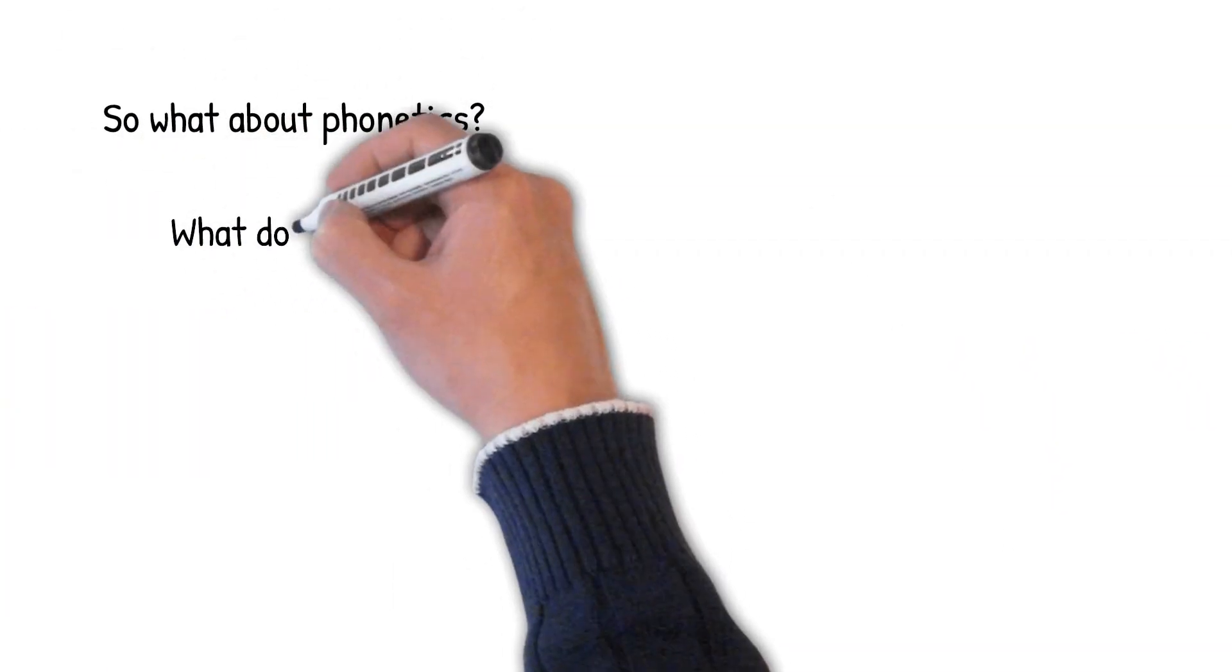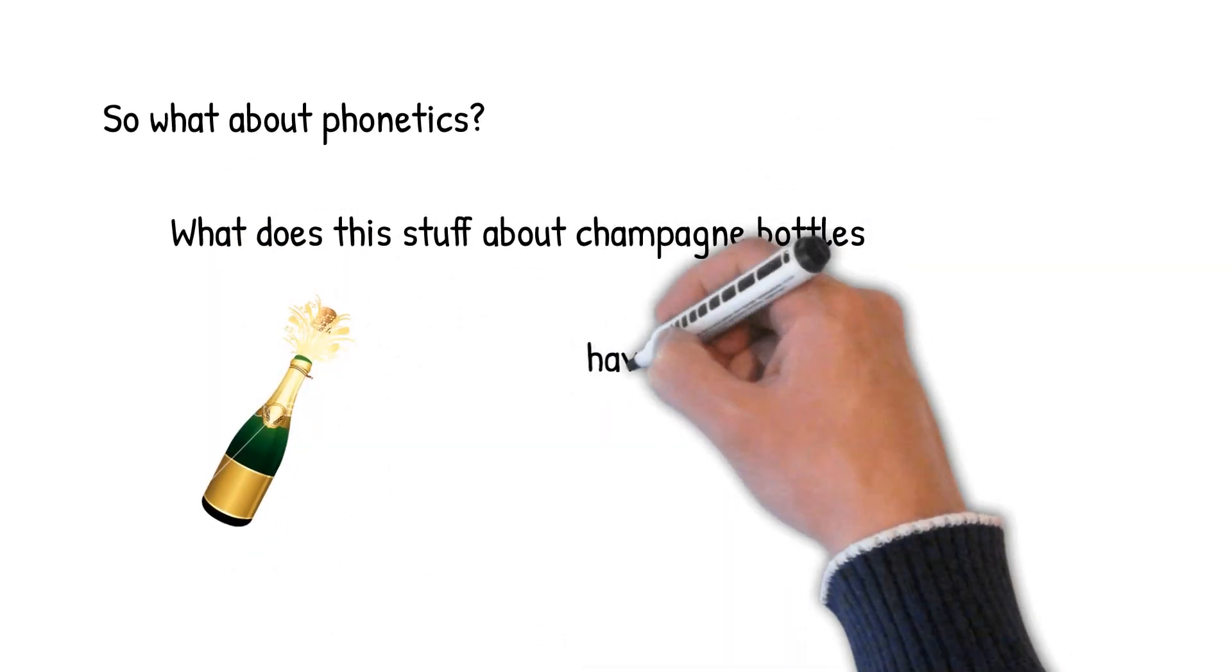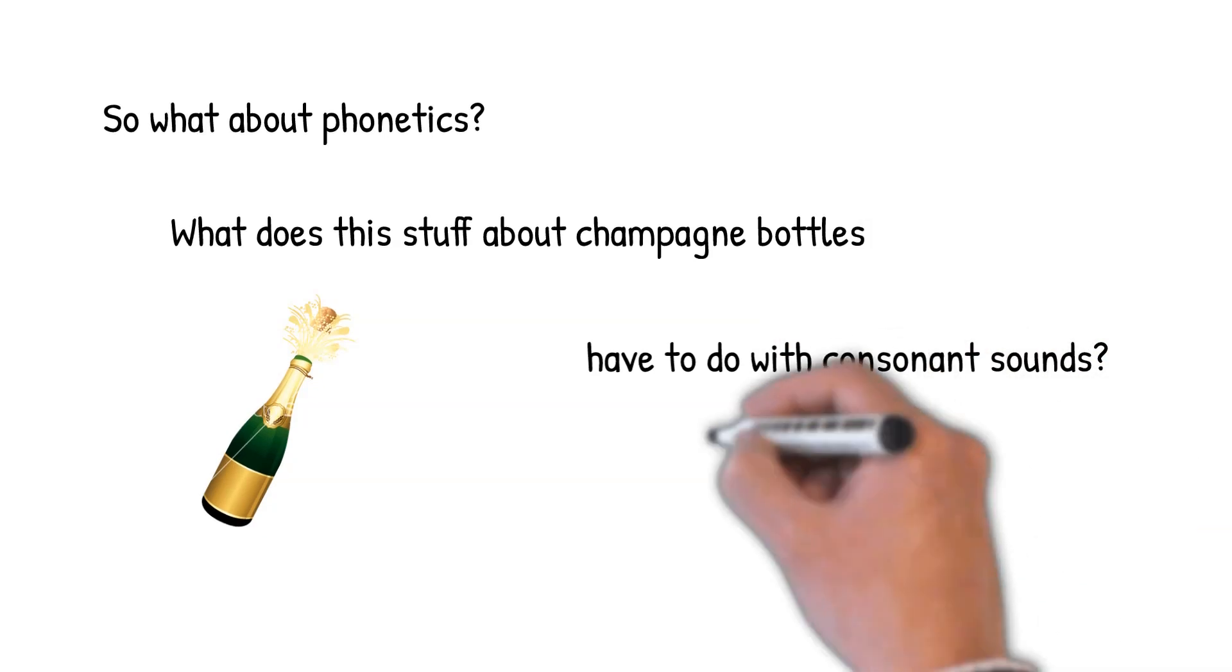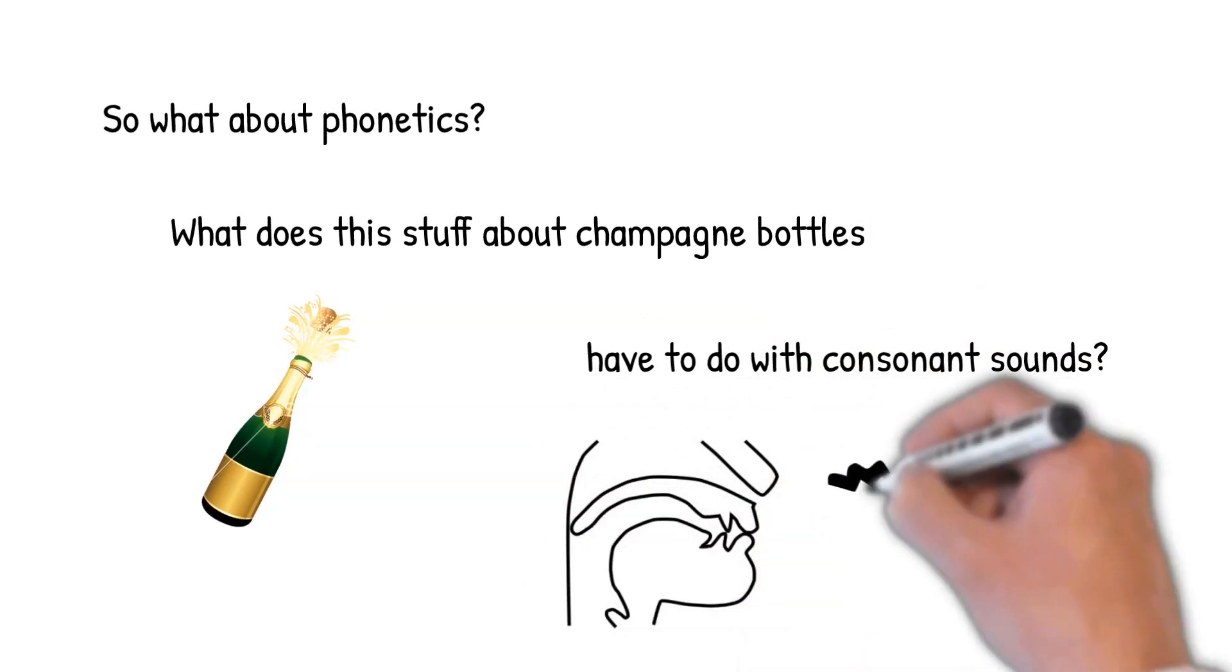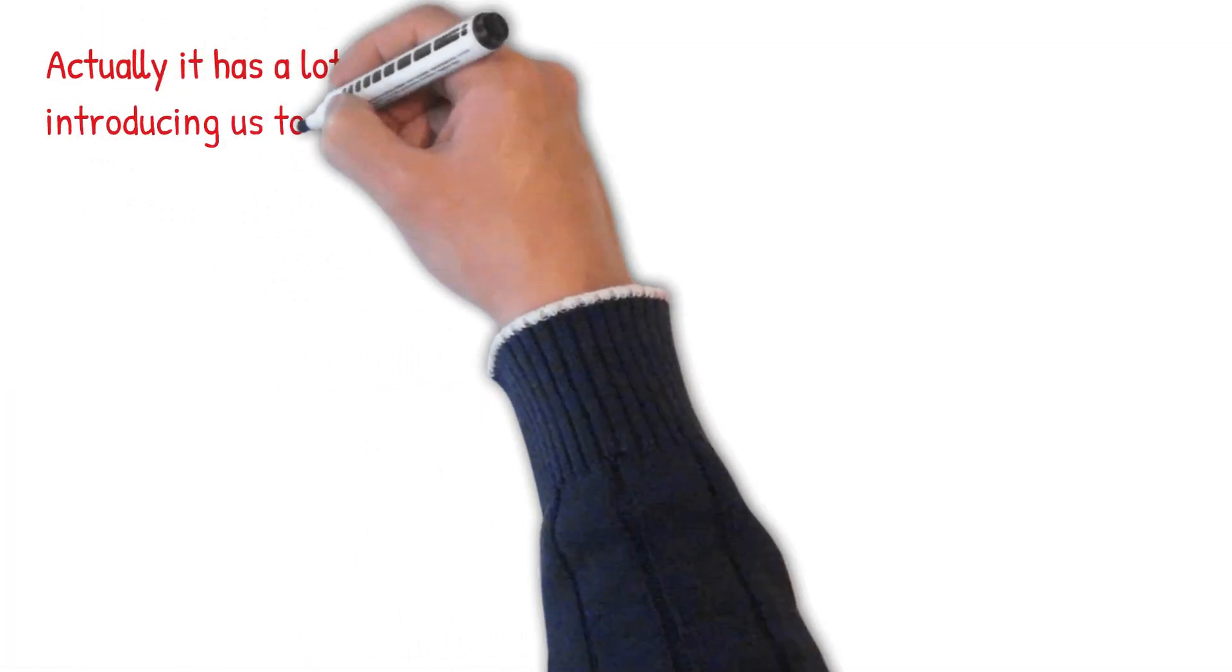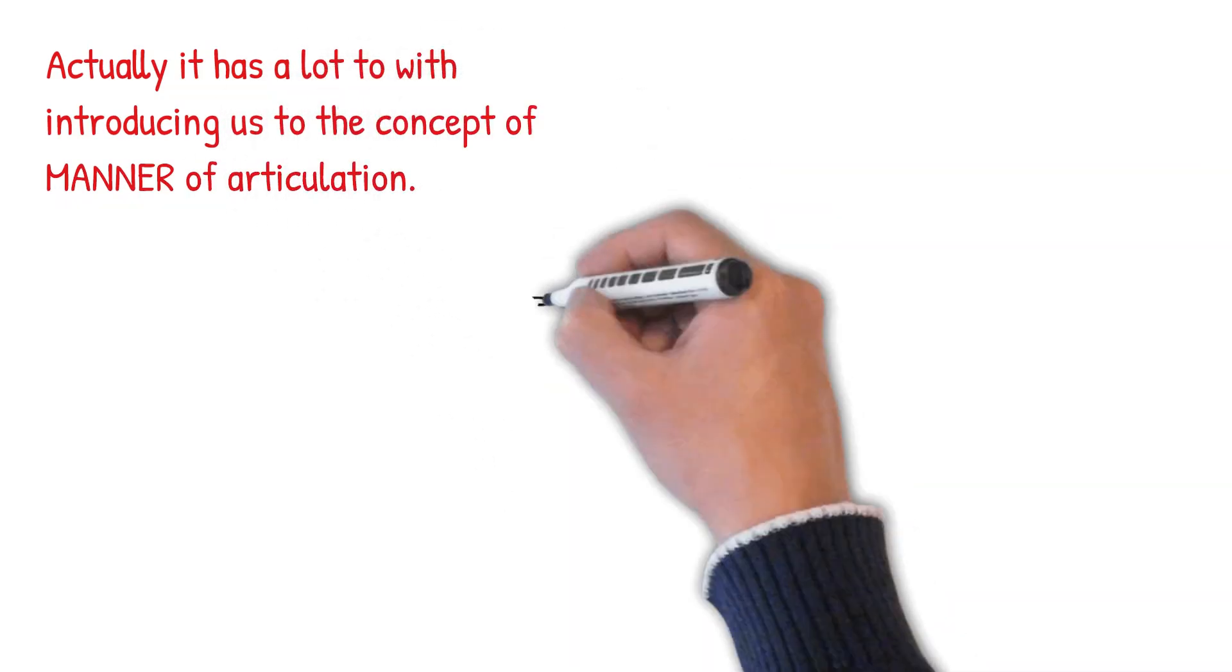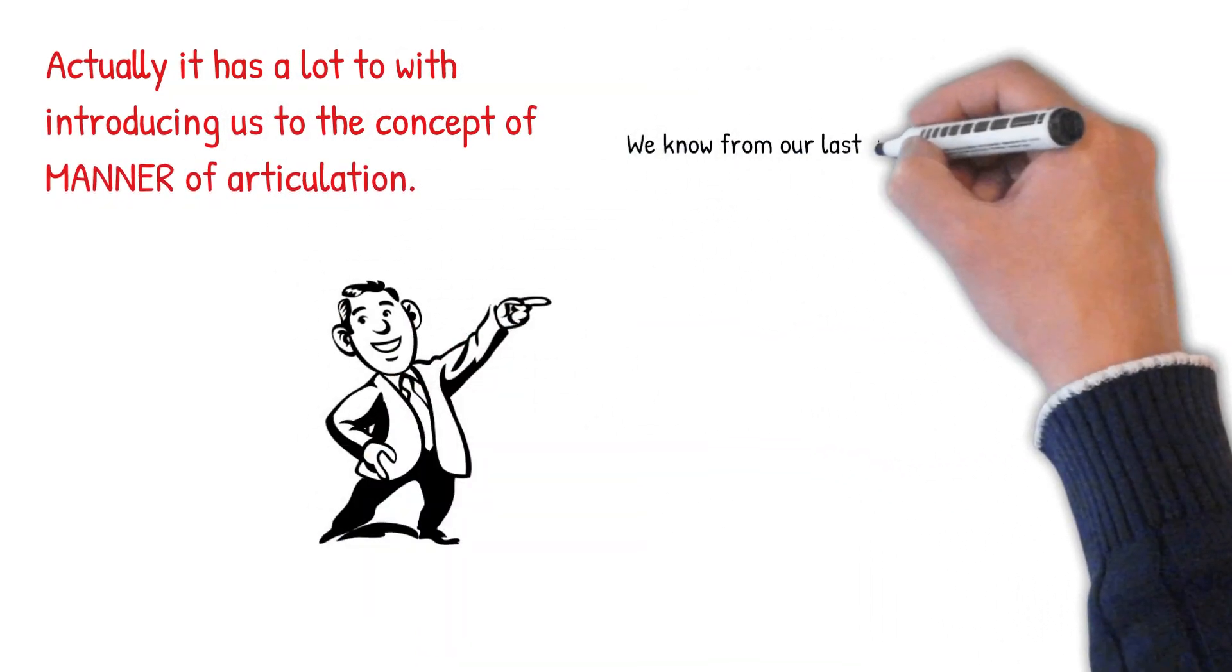Okay, you ask, so what about phonetics? What does all this stuff about champagne bottles have to do with how we make consonant sounds? Consonant sounds like the sound B shown here. Actually, our champagne example is pretty useful as a mechanism for introducing us to the concept of manner of articulation.